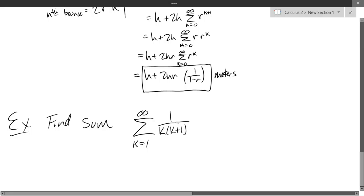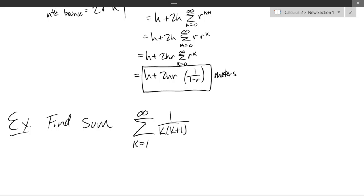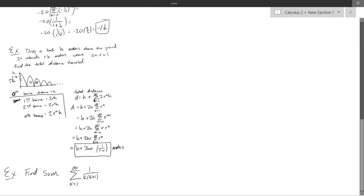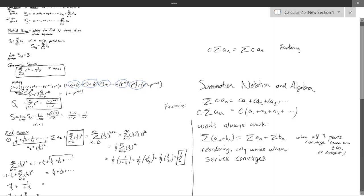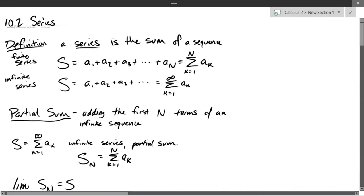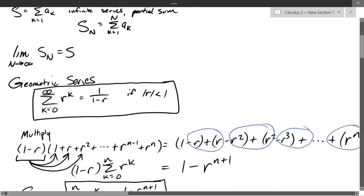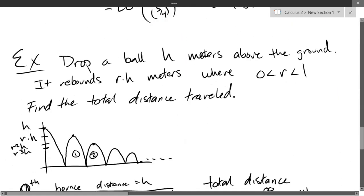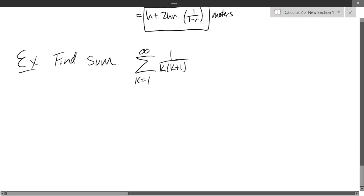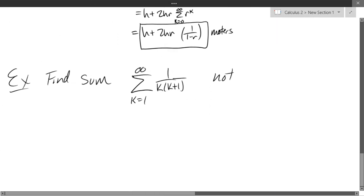What other way did I mention for finding a sum? If we can get a nice partial sum, we can find the full sum by taking a limit. Let's try to get a partial sum for this series. It's not geometric, so we'll try the partial sum approach.